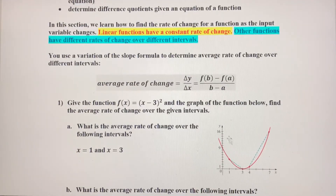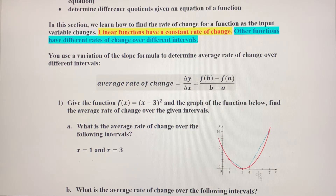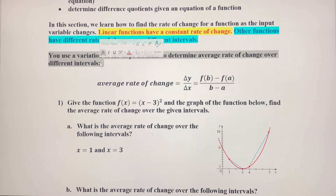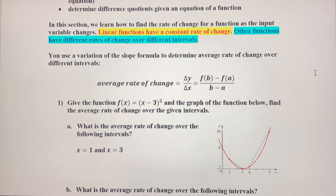Think about this quadratic function here. If you're talking about this interval from 1 to 3, which we're going to find in a second, there's an average rate of change here from 1 to 3. The rate of change from 4 to 7, for example, is going to be different, because the function is doing different things as it moves from left to right. So we're going to use basically the slope formula — just a slight variation — to find average rate of change.